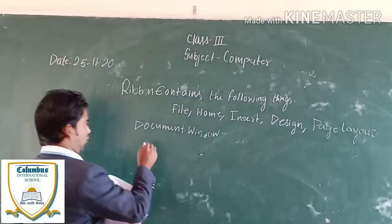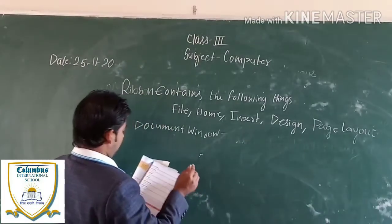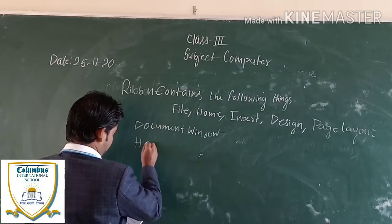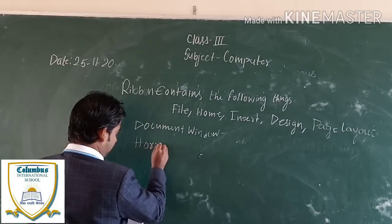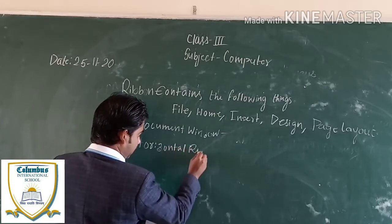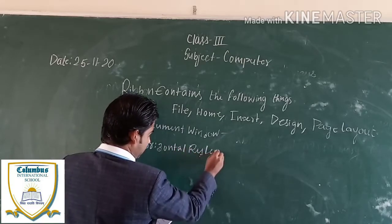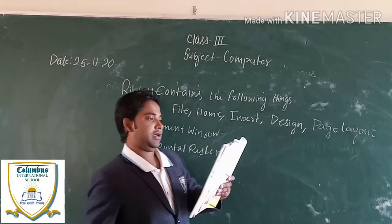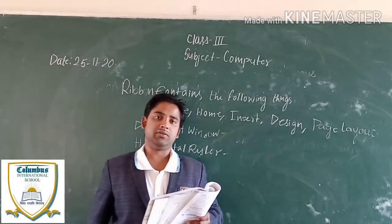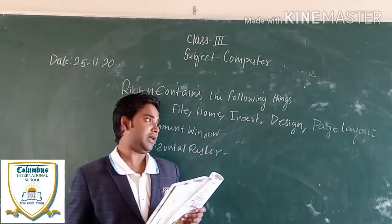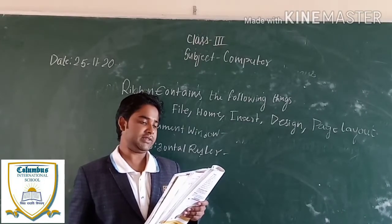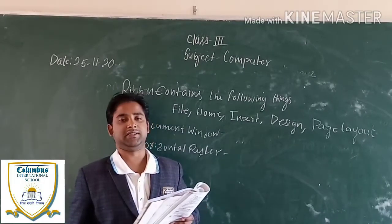The horizontal ruler is located at the top of the document window. It is used to set left and right margins.